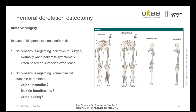One treatment option for torsional malalignment is a derotation osteotomy — a rather invasive surgery in which the bone is literally cut and refixated into the desired position. In the case of idiopathic torsional deformities, the decision on whether to operate is not straightforward. There is no general consensus regarding the indication for surgery, which is normally performed when the patient is symptomatic, but the final decision often lies with the clinician's experience. Furthermore, there is no consensus on which biomedical parameters could quantify the need for surgery or the expected targeted outcomes, such as joint kinematics, muscle lever arms, or restoration of normal joint loading.